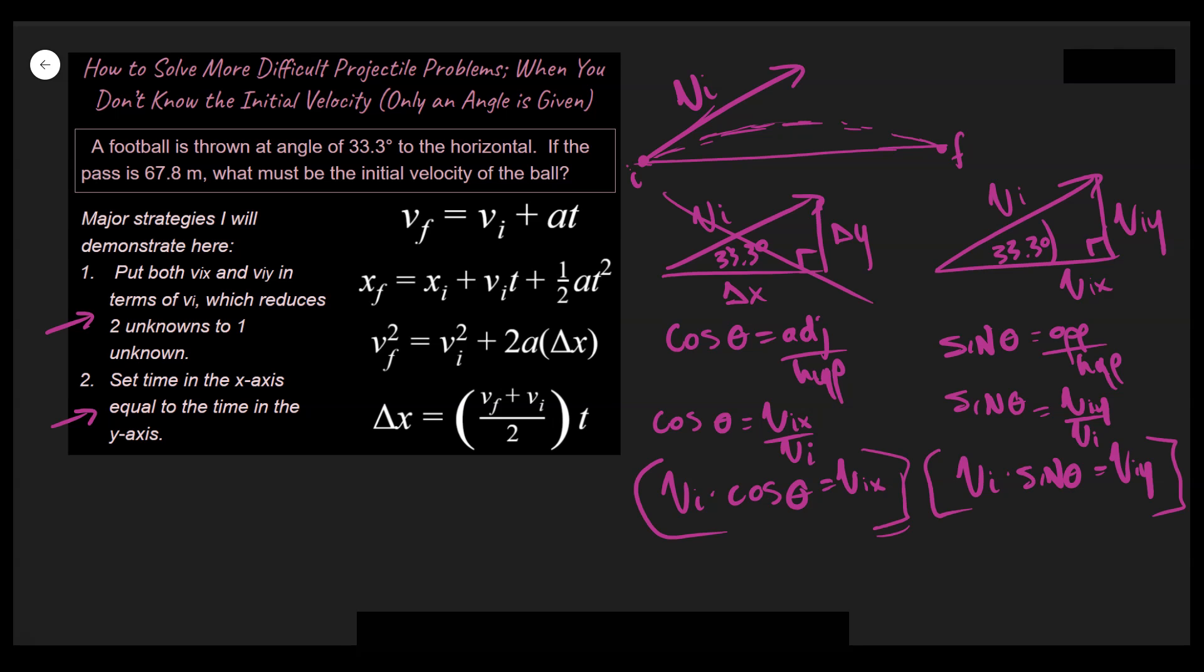So note also what I'm doing is I'm putting my v_initial in the x in terms of v_initial. And this is the first strategy that we talked about. And I'm going to do the same thing over here for v_initial in the y. And the point of doing that is I don't know my v_initial in the x or my v_initial in the y. So those are two unknowns, you could say. And what I'm doing is reducing two unknowns to one because I'm going to be working with v_initial for both my x and my y-axis. That's a really crucial strategy to be able to solve these types of problems.